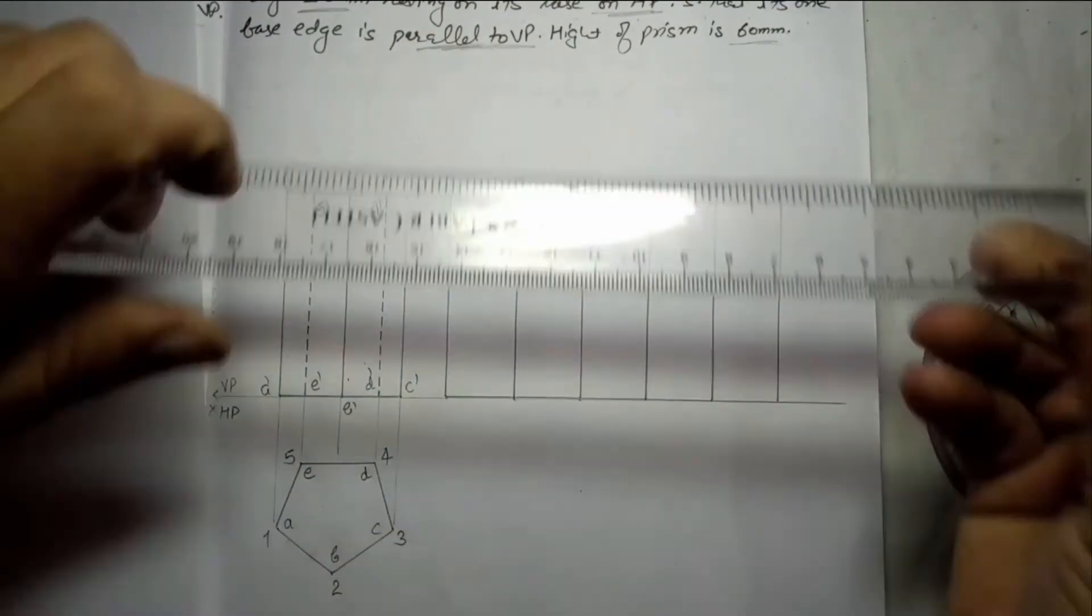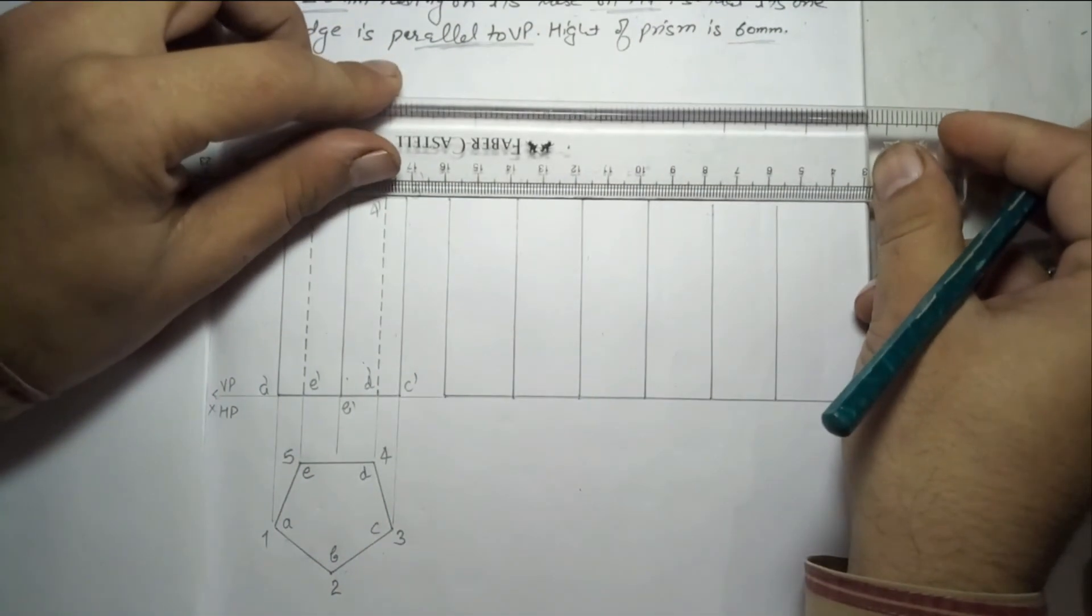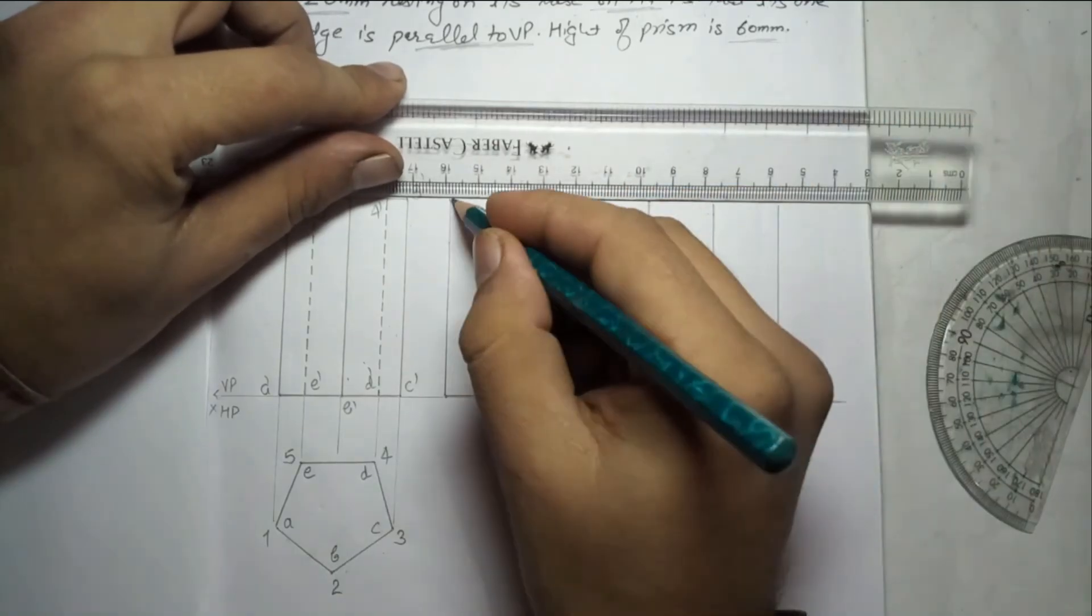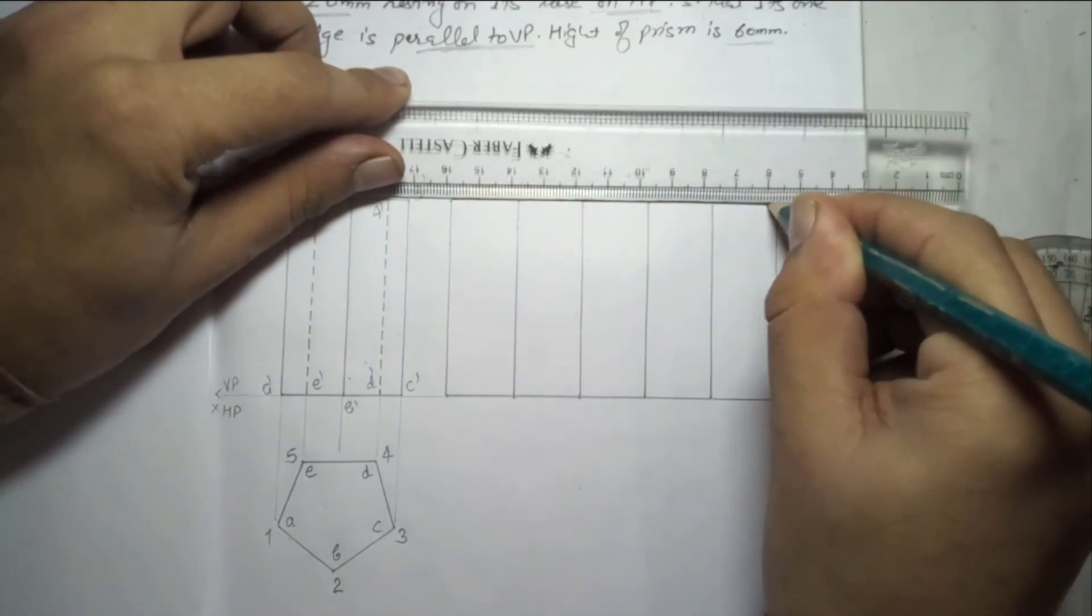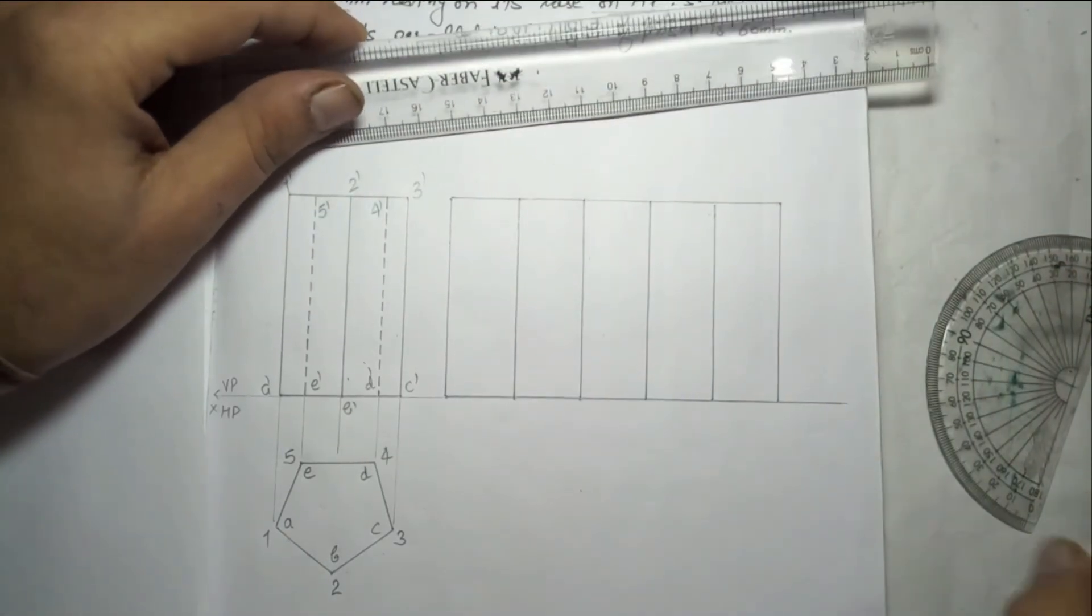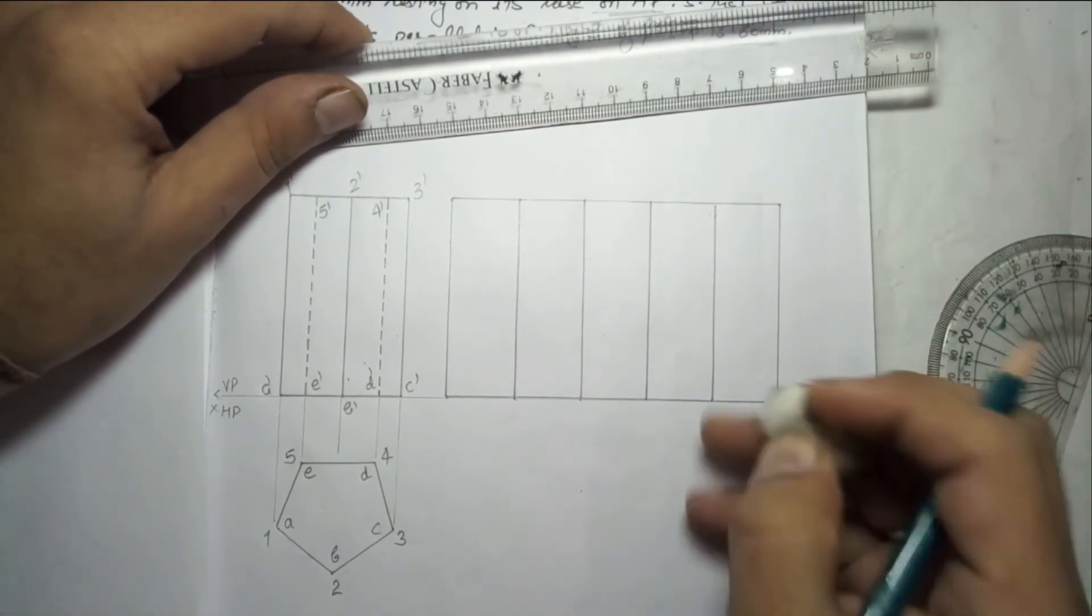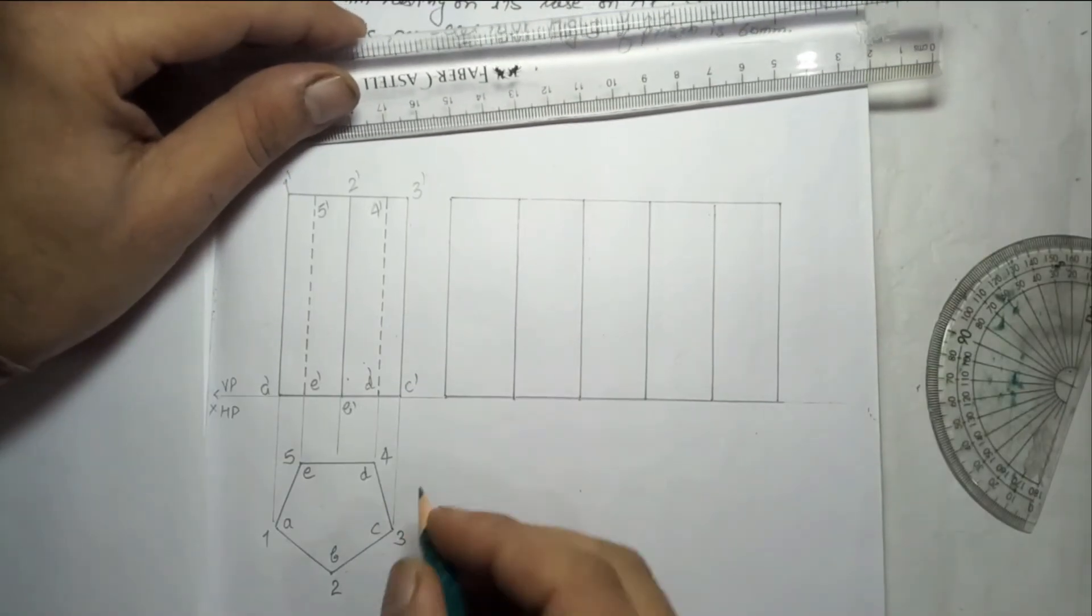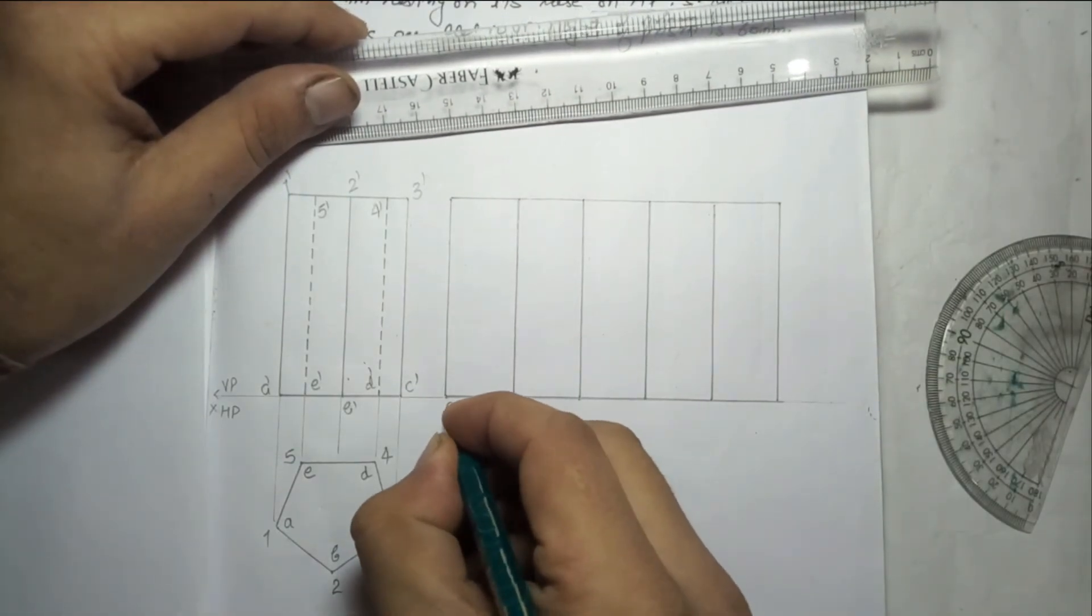Then we will close the surface like this. So this is the total surface. Now we will give the numbering to this also.